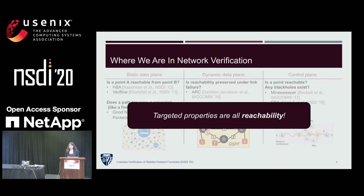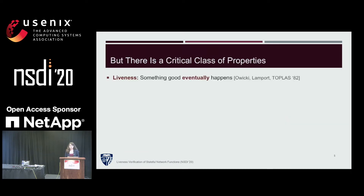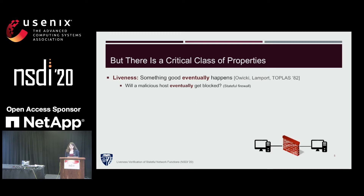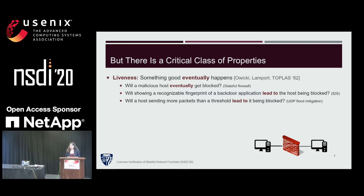Is point A reachable from point B? This leaves out an important class of properties for critical network functions, namely liveness. Liveness properties are mainly expressed as something desirable eventually happens. For example, in a stateful firewall, a liveness property would be a malicious host eventually getting blocked. In an intrusion detection system, observing the fingerprint of a backdoor application should lead to that host being blocked. Or in a UDP flood mitigation function, a host sending more packets than a threshold should lead to that host being blocked.